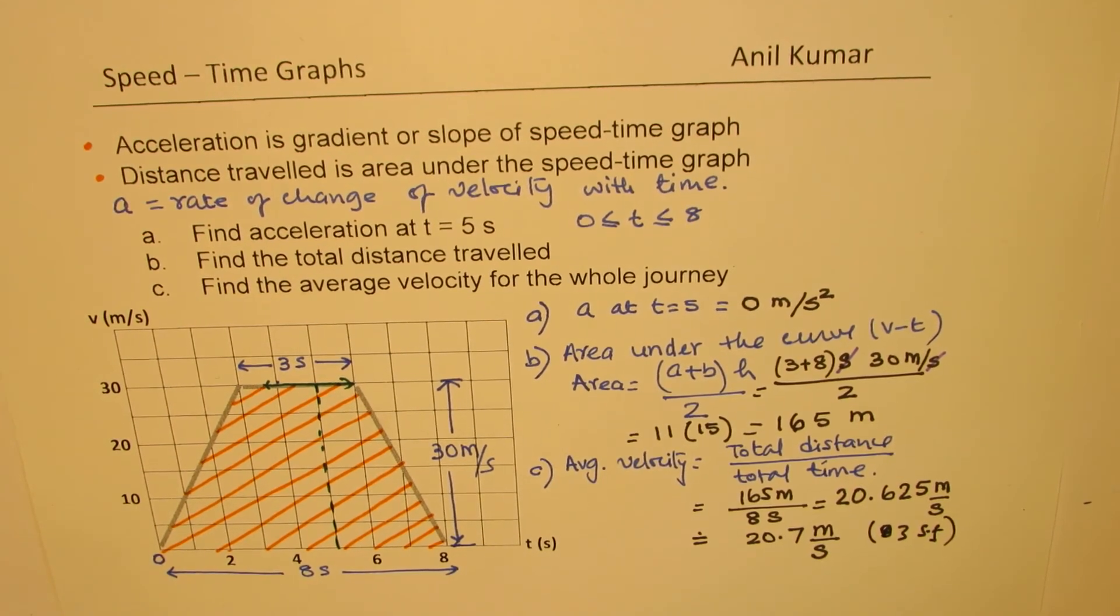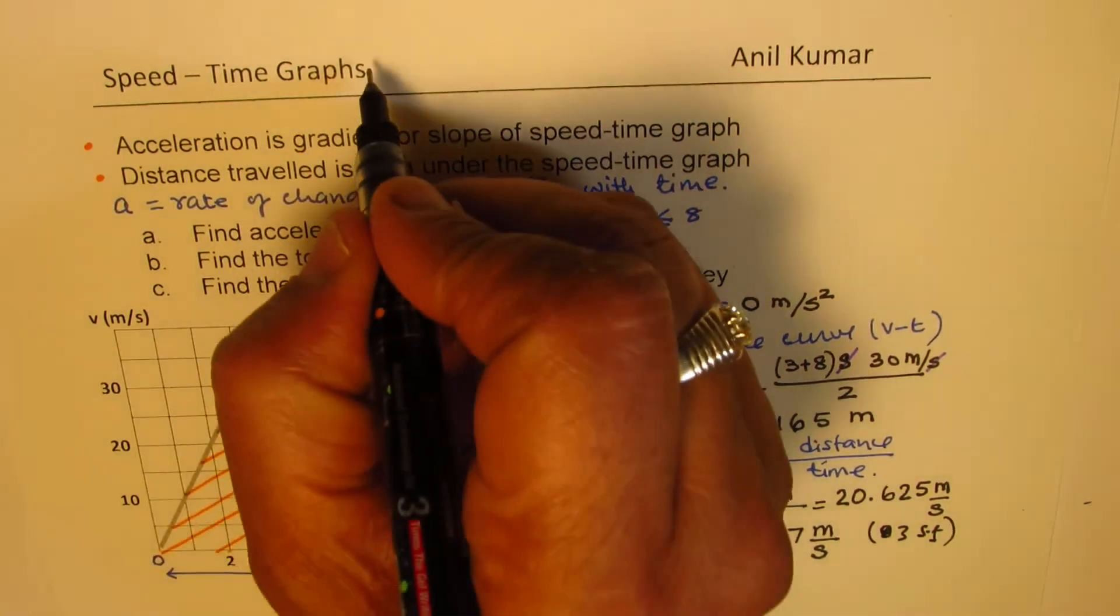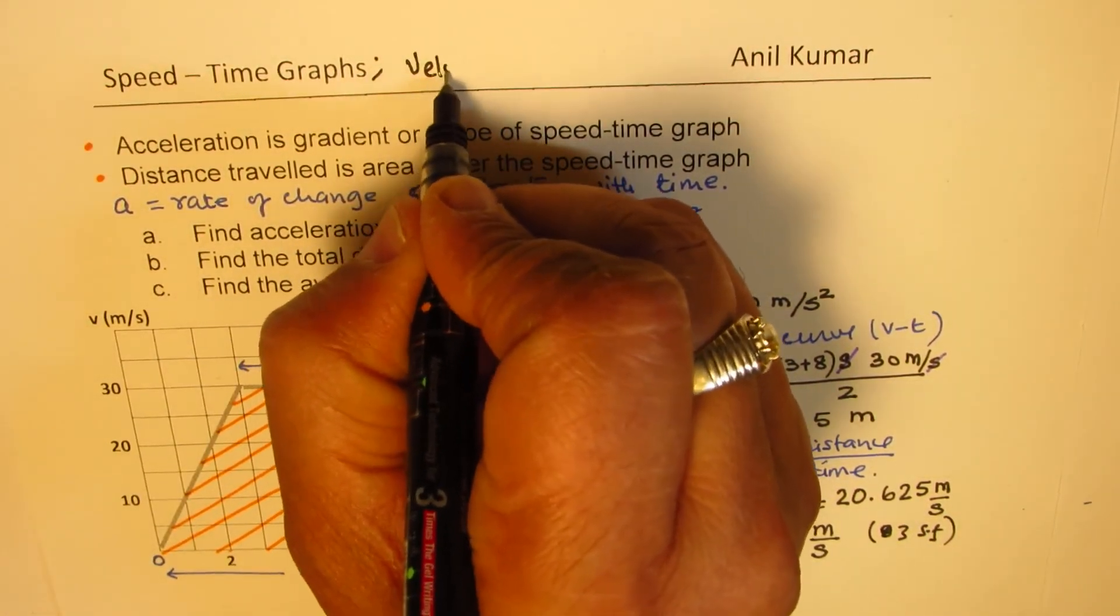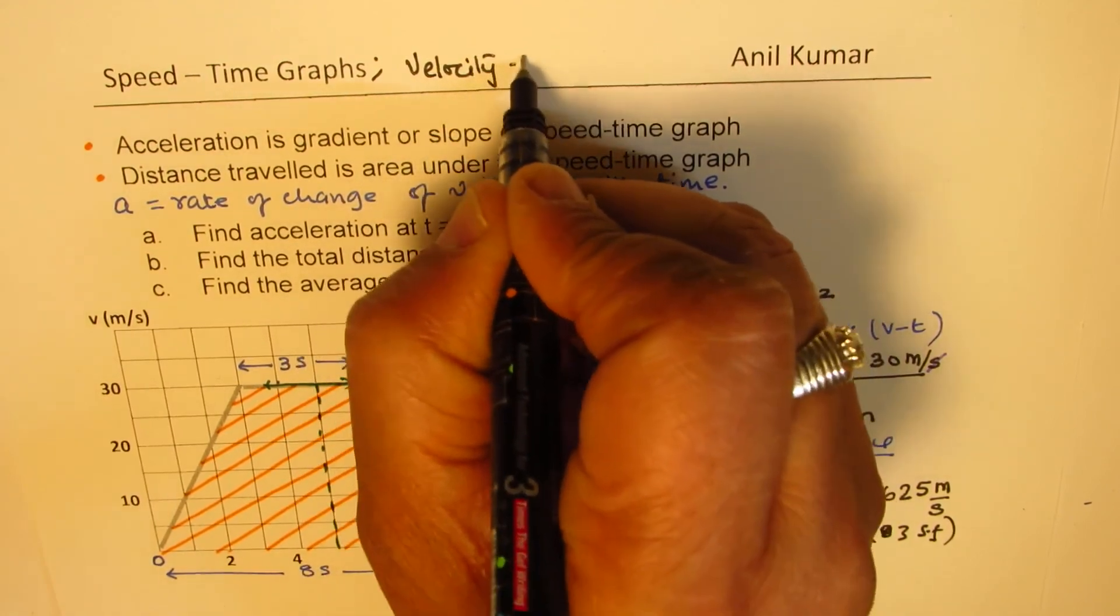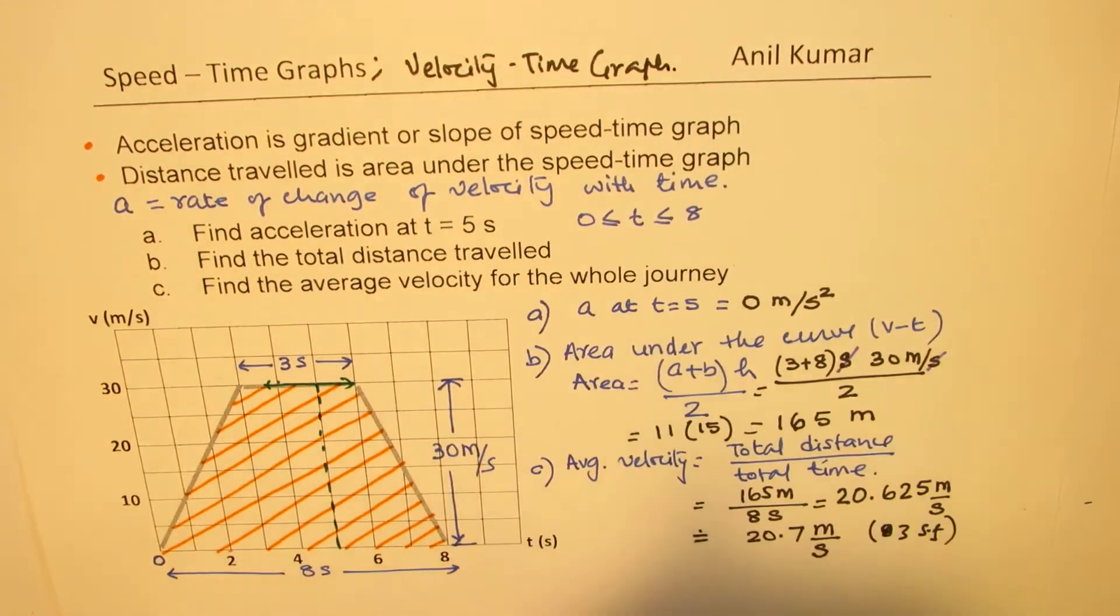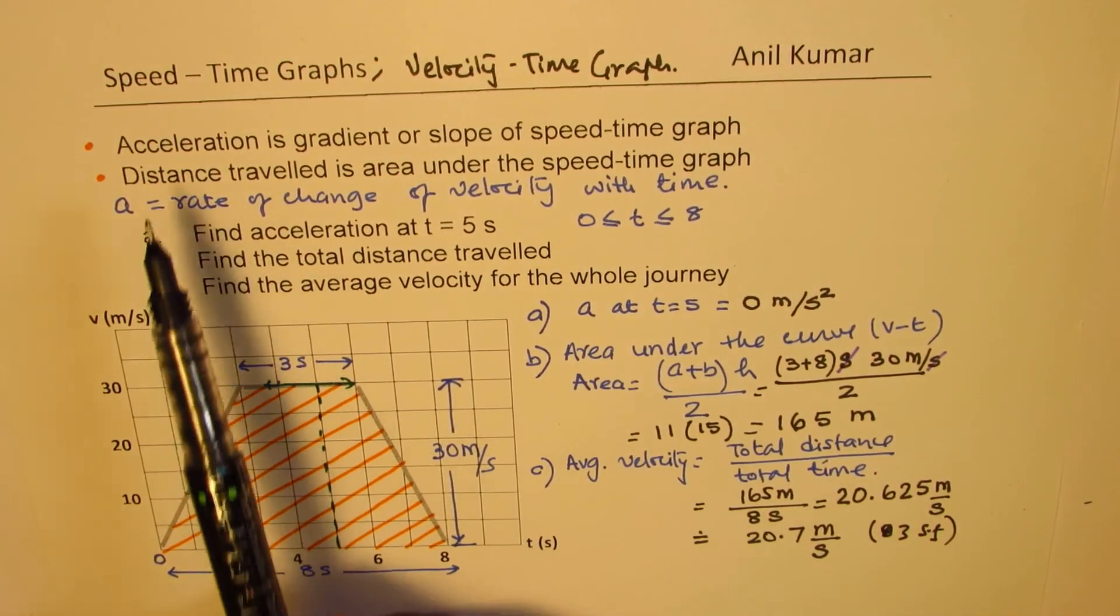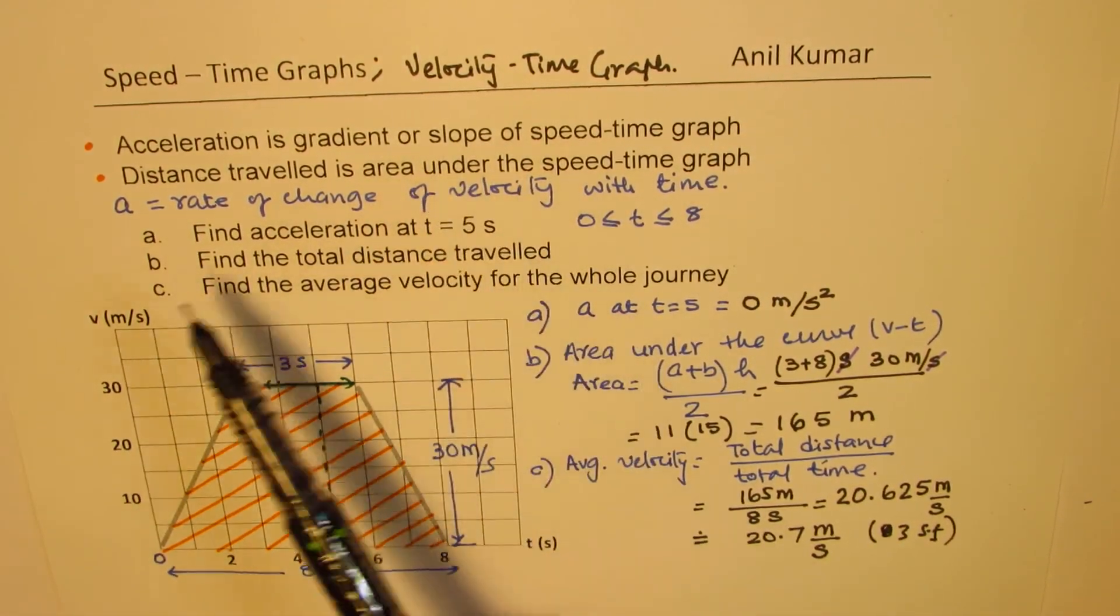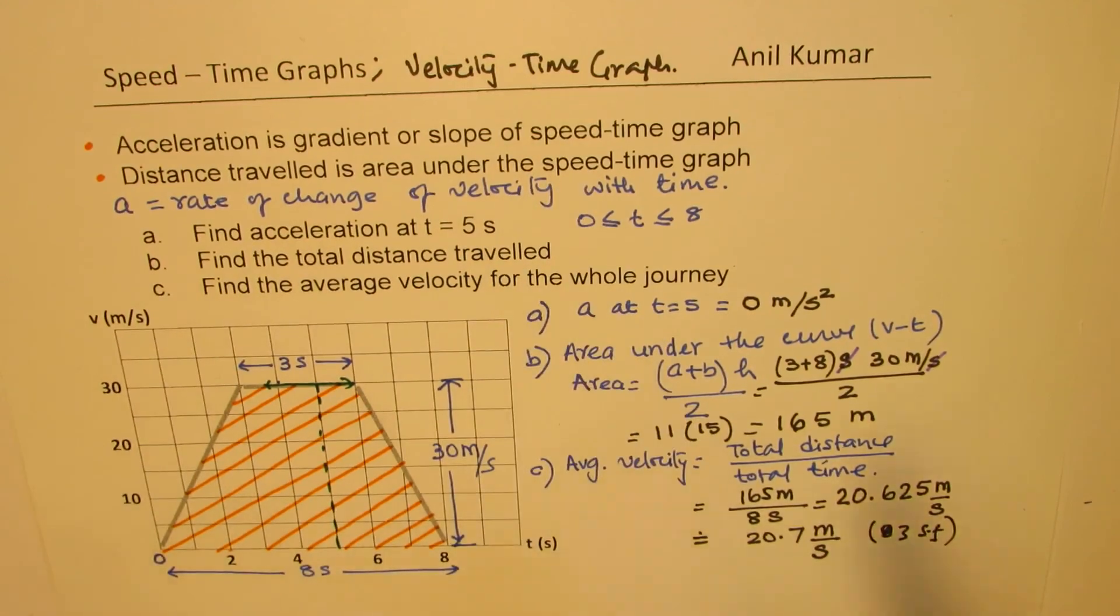So I hope the steps are absolutely clear. So whenever you are given speed time or velocity time, we could have this one, the same thing, or velocity time. In that case, acceleration is the gradient or the slope of this curve and distance is area under the curve. That helps to find the answers.